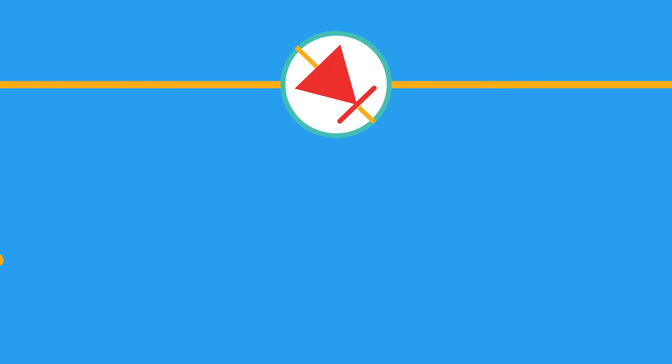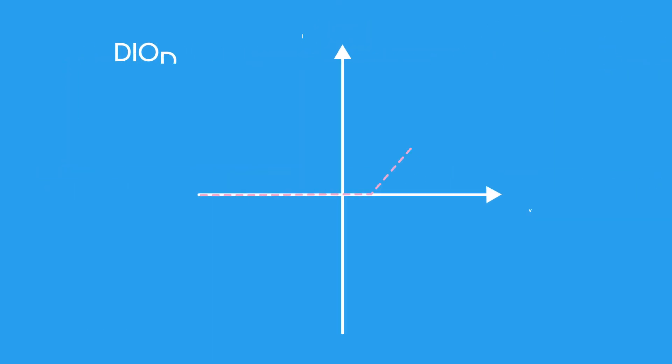What happens to the bulb when the diode is reversed in this circuit? The bulb will not light as current cannot flow through the diode in the reverse direction. Here is an IV graph for a diode.